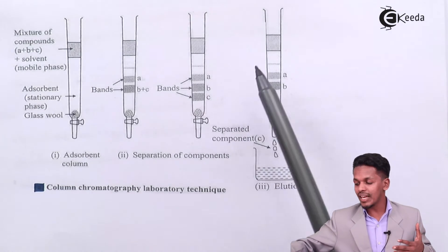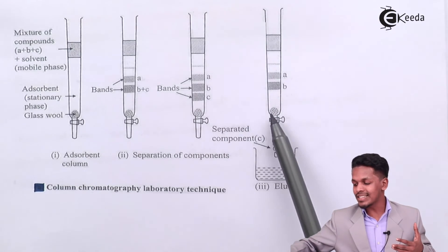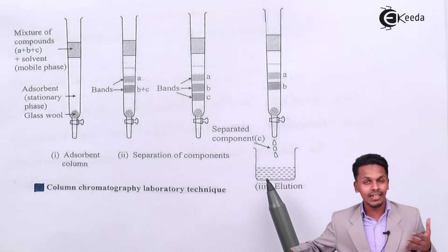So in this case, after the whole separation has been done, we can find that the first component, that is C, is the component that gets separated out.